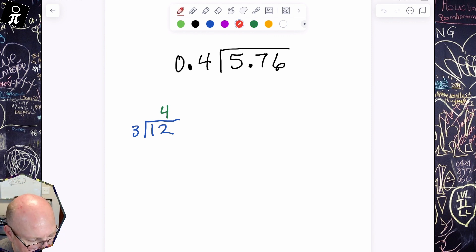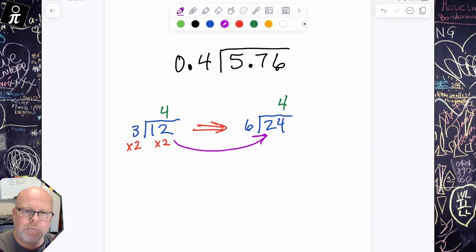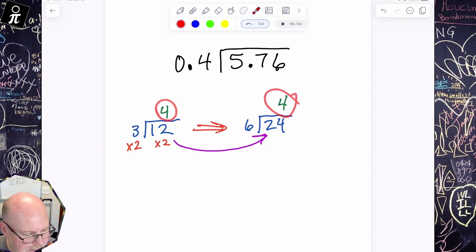All right. But here's what's kind of cool. If I just arbitrarily decide to multiply both of those numbers by 2, I'm going to get a totally different problem. I'm going to get 6 into 24, which means we're going to get... And here's the shocker, we're going to end up getting the exact same answer. So even though the problem itself totally changed from 3 into 12 into 6 into 24, the answer itself stays the same.